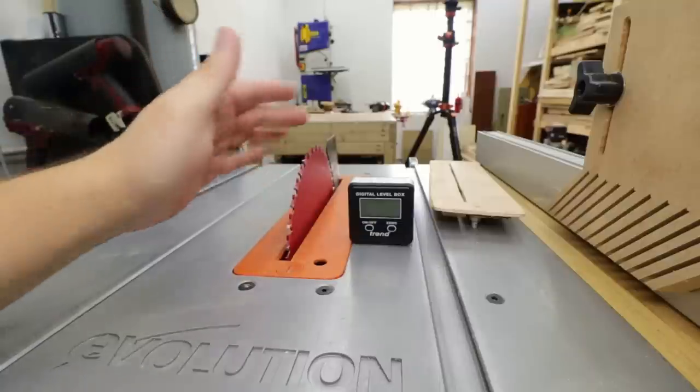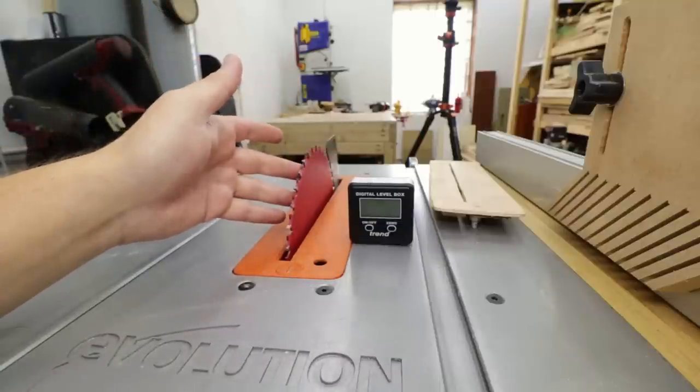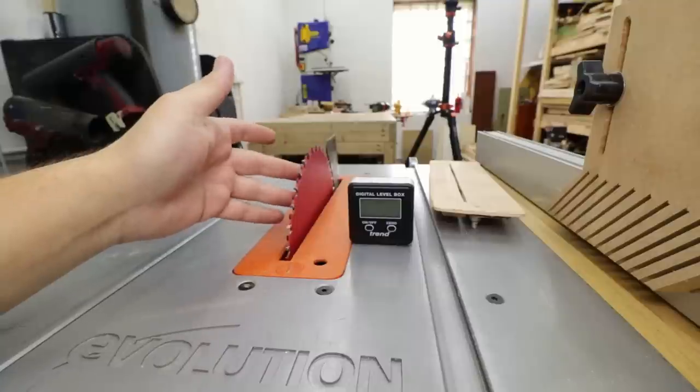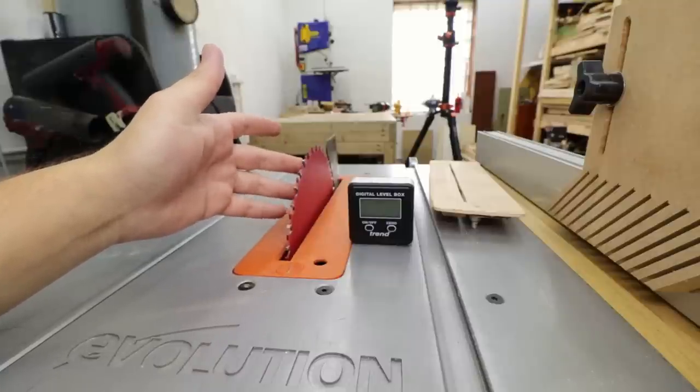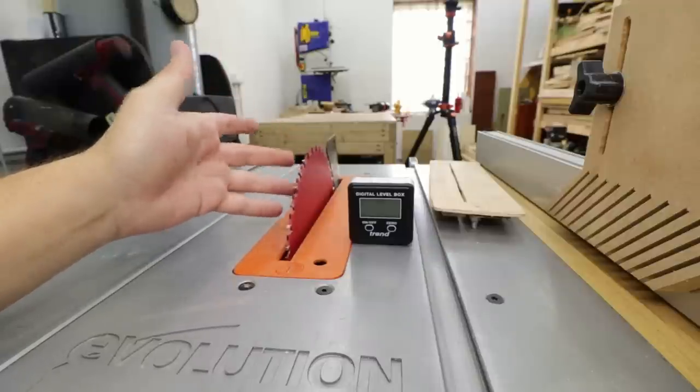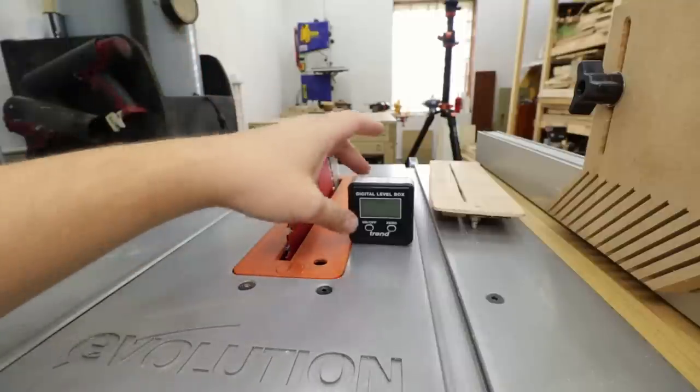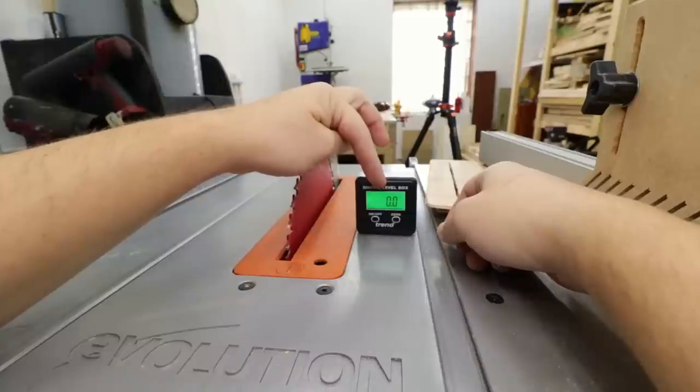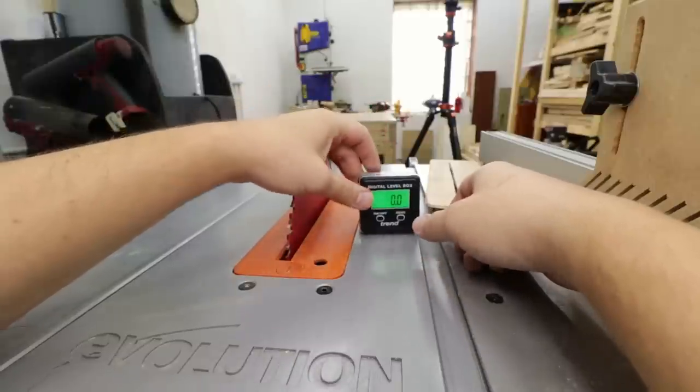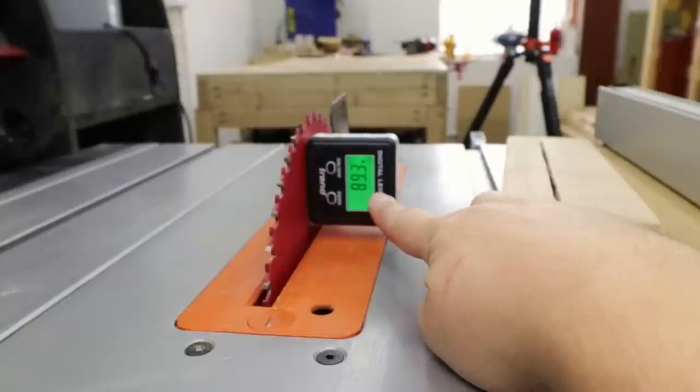The first example I want to show you where these little boxes come in super handy is when you want to set up your table saw blade. Check if that's at 90 degrees if you want to do straight cuts, or if you want to change it to a different angle, 45 or not a standard angle. So let's give it a go. So the level is at zero with the table. Whack it to your blade and as you can see I need a bit of tweak on my table saw blade.